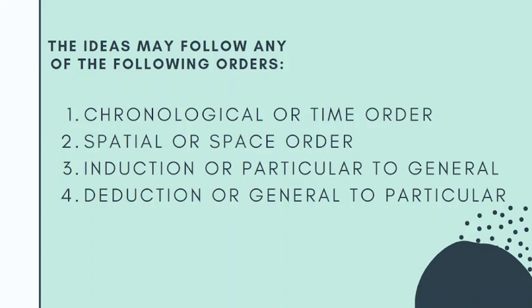Next is spatial, or space order. When we say spatial, the reader is taken from the starting place to another place in an orderly manner. It describes a physical location or position in space. It can use words like above, below, besides, between, next to, in front of, behind, inside, outside, opposite, within, nearby, and many more.